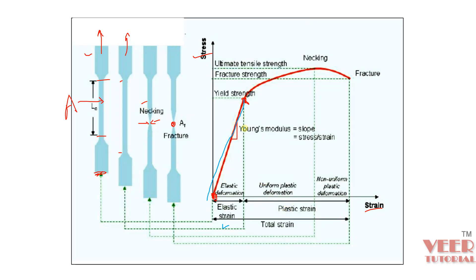After the elastic zone, if you continue stretching the part, non-linearity begins. The end point after which non-linearity starts is called the yield strength. The maximum stress on the curve is called the UTS — ultimate tensile strength — and the final point is the fracture. After UTS, necking starts and the part eventually fails. This region is called the plastic zone, because after this zone if you remove the load, the part does not return to its original position.